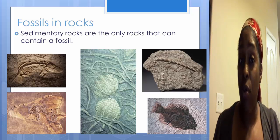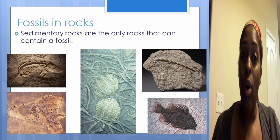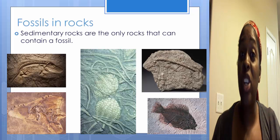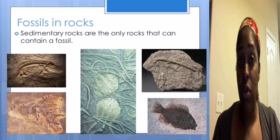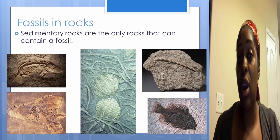And a metamorphic rock comes from heat and pressure. So whatever fossil may have been in there at one time has been stretched out because of the heat, and it's probably more than likely going to be deformed. There's not a way to exactly see the fossil. So the only way you will see a fossil is in a sedimentary rock.